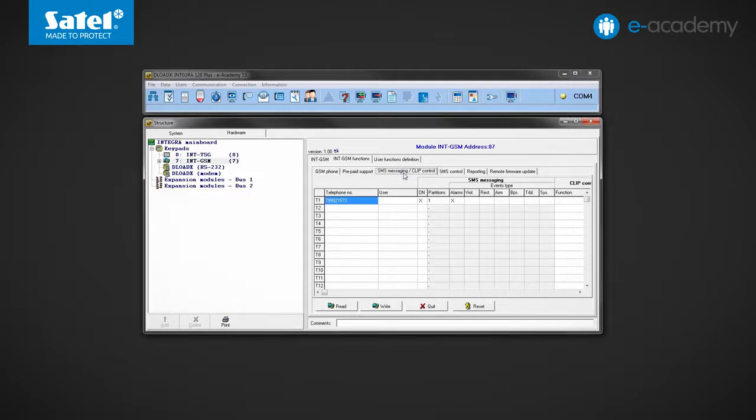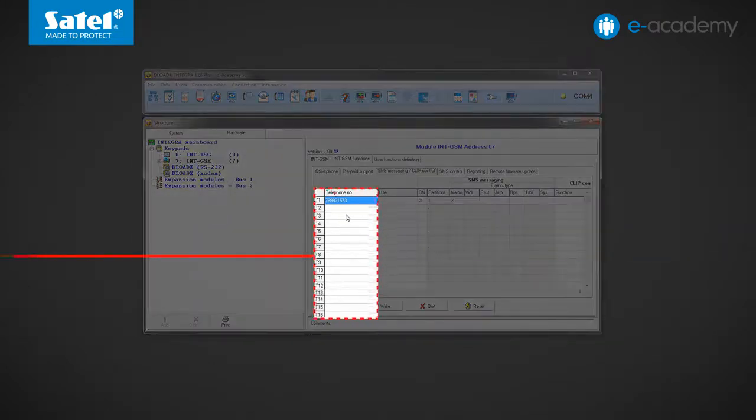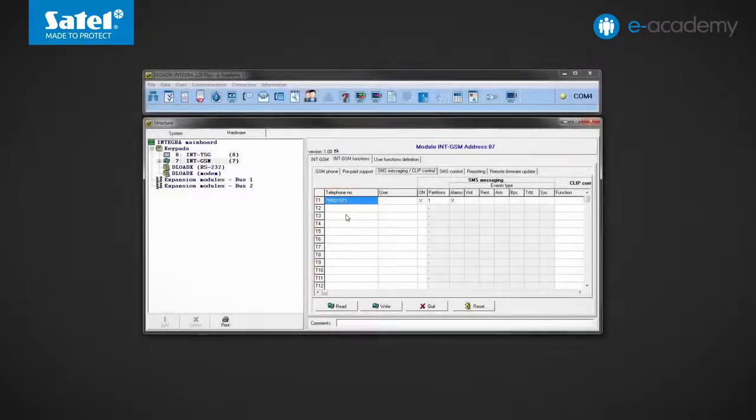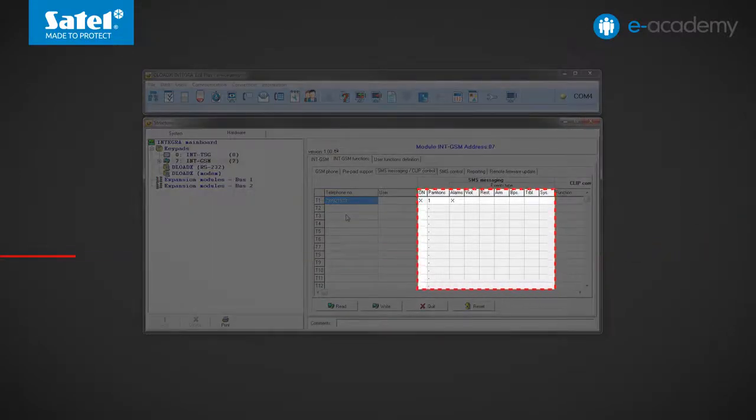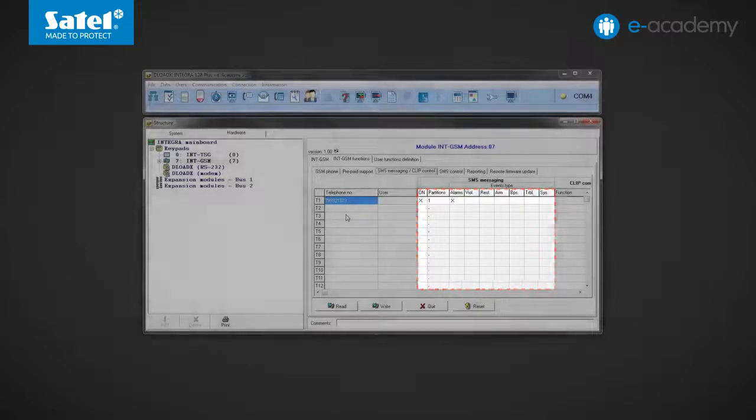In the table, you can see the settings entered in the previous episode, including the phone number to be notified about alarms in Partition 1. In the INT GSM settings, you can enter up to 16 telephone numbers. As we showed you in the previous episode, their users can be notified about various events in the system.